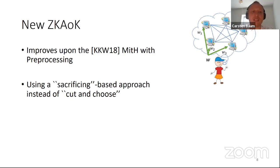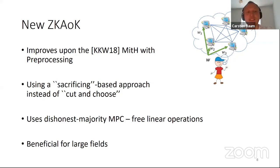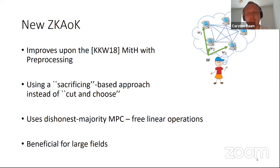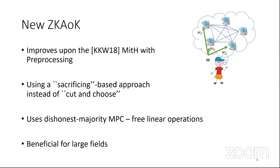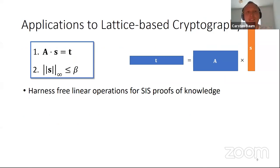We examined other MPC schemes for preprocessing. They use cut-and-choose; we use a sacrificing approach instead, combined with an MPC protocol that has dishonest majority — meaning a majority of parties can be corrupted. This gives us free linear operations: we only pay for non-linear operations in the circuit. The sacrificing approach has benefits for large fields, while cut-and-choose performs better for bits.